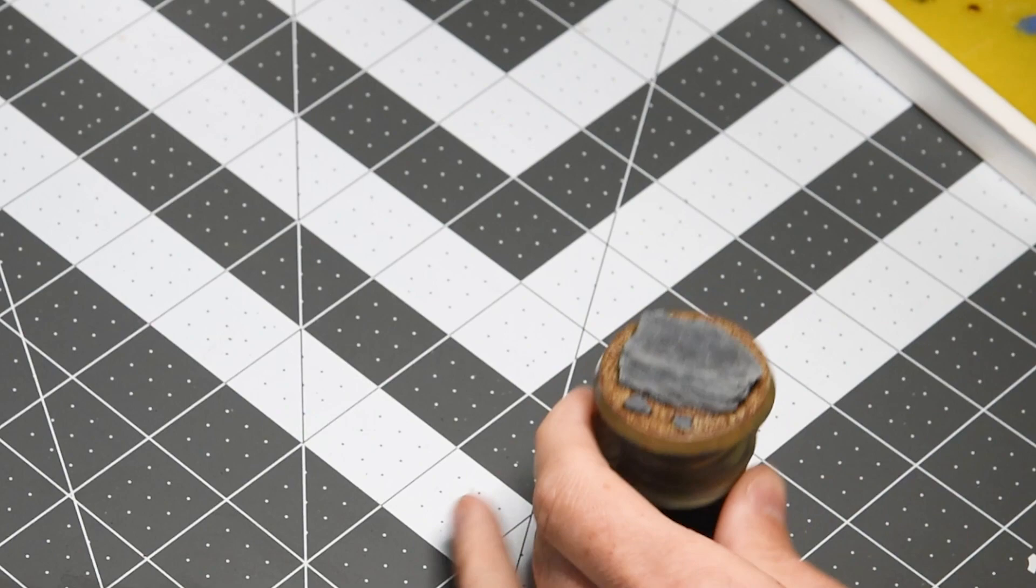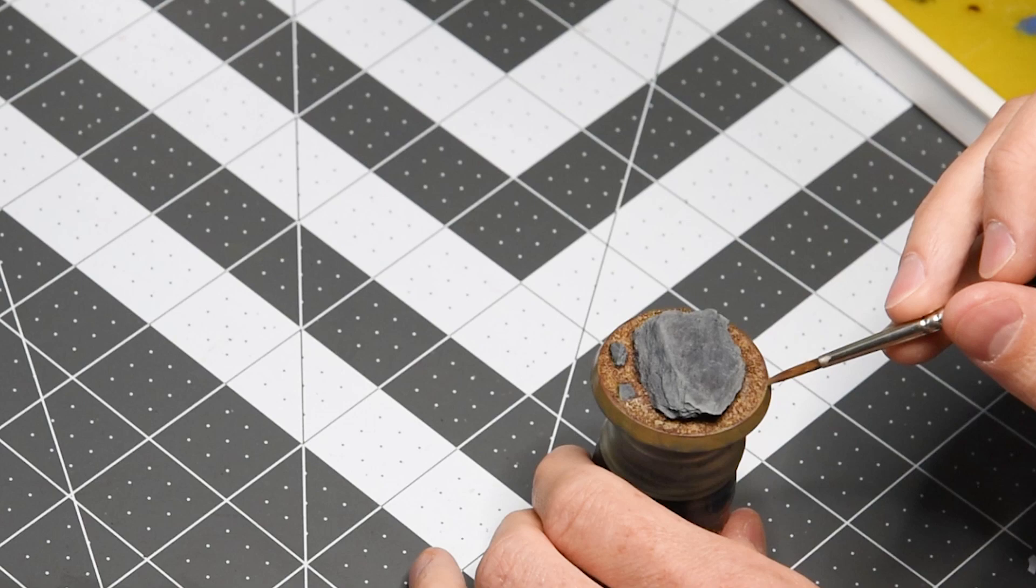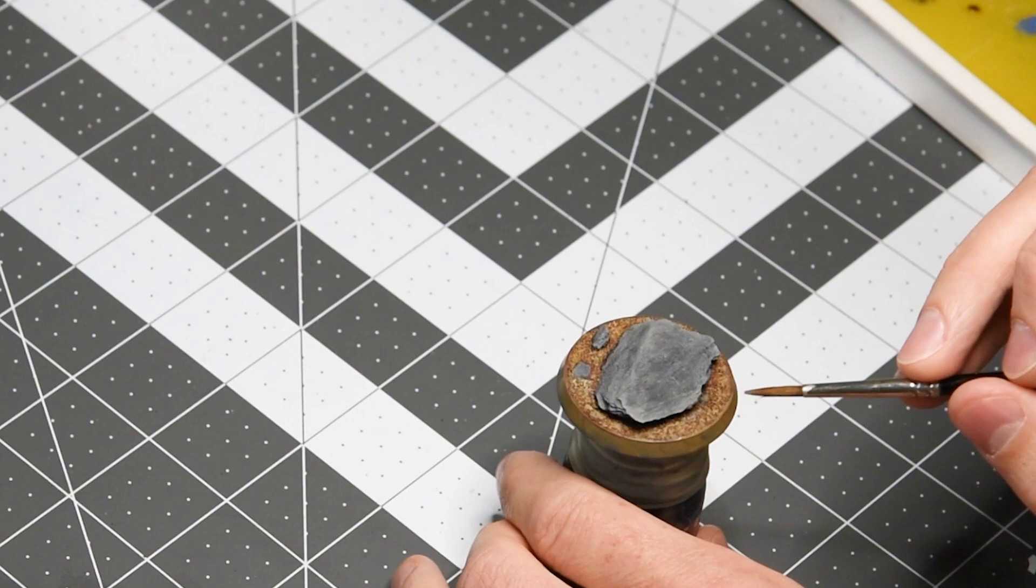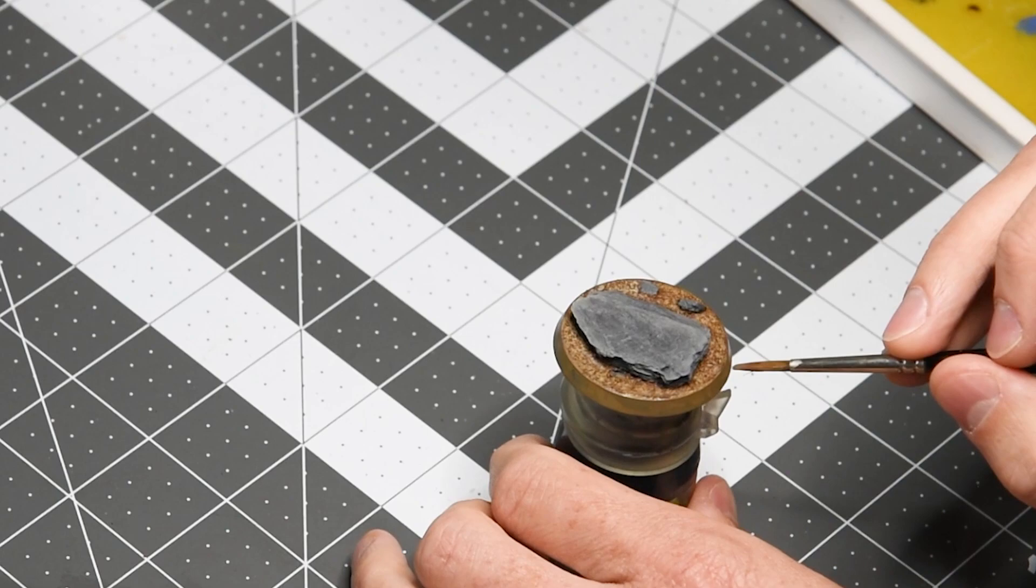And I'm using Steel Legion Drab here which is a little different than a lot of the black rim bases you see and I think it's a cool look. I stole this idea from Darren Latham who's the famous Games Workshop and heavy metal designer and painter and it's a really cool look and one you see on the box art quite a bit.